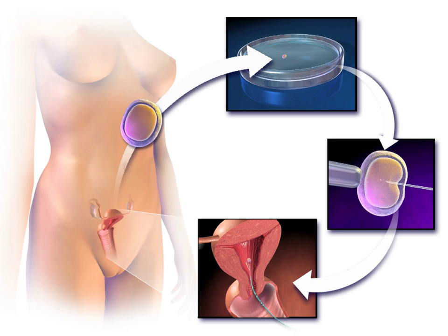Sex selection is the attempt to control the sex of offspring to achieve a desired sex. It can be accomplished in several ways, both pre- and post-implantation of an embryo, as well as at birth. Pre-implantation techniques include PGD, but also sperm sorting.